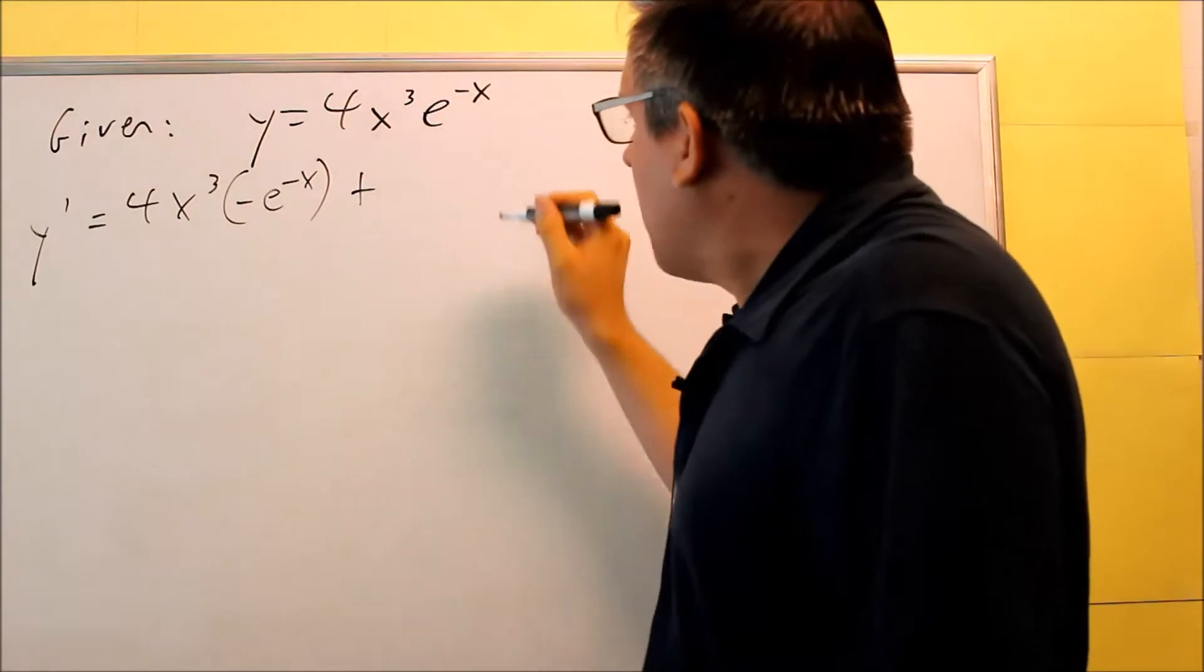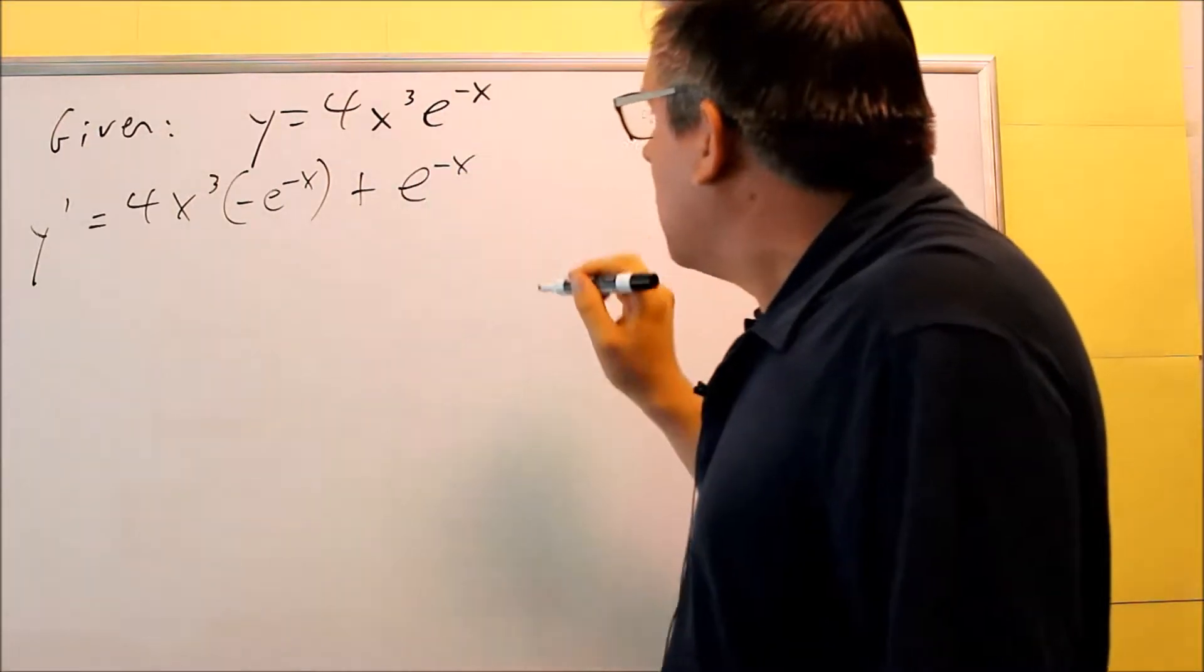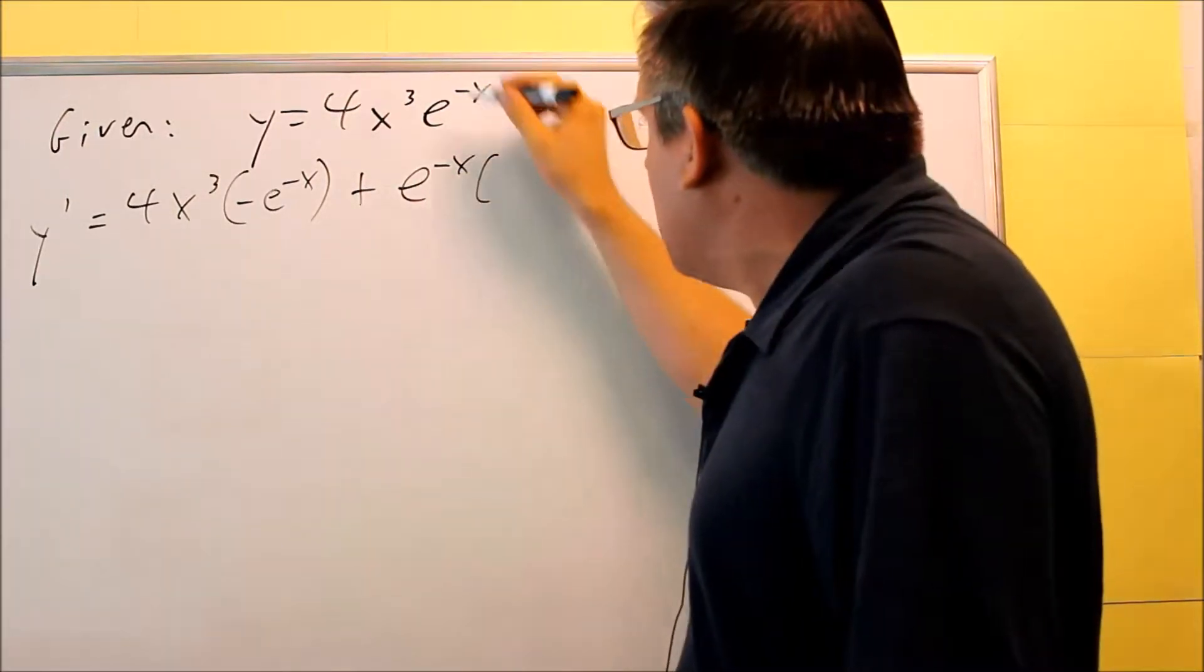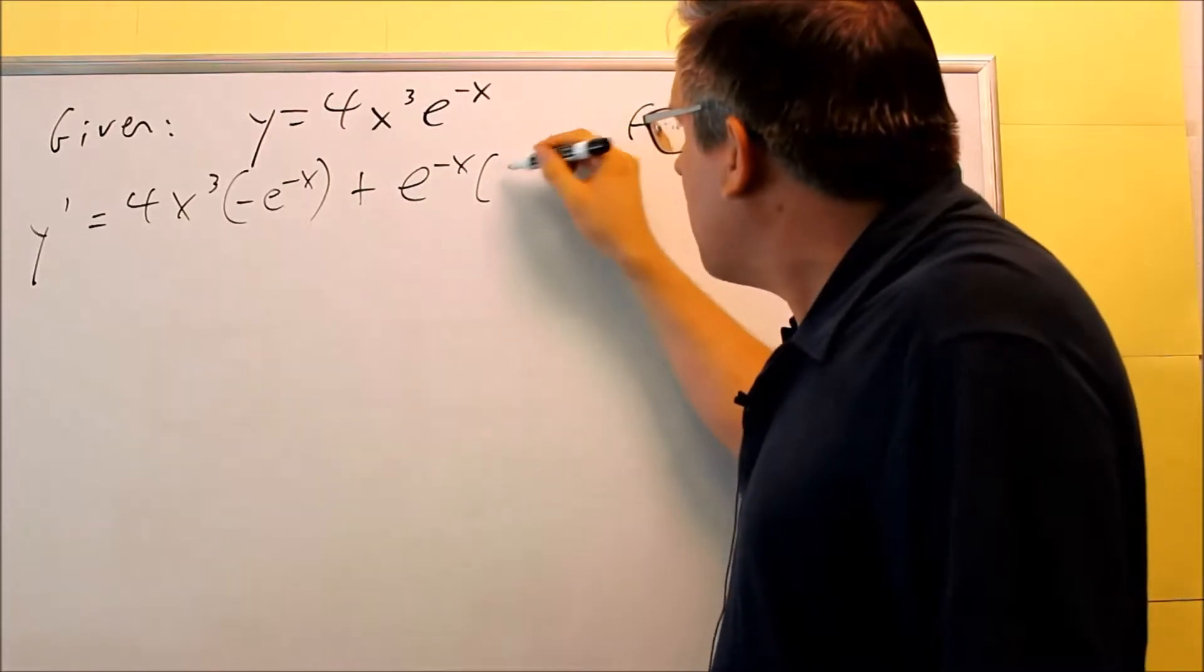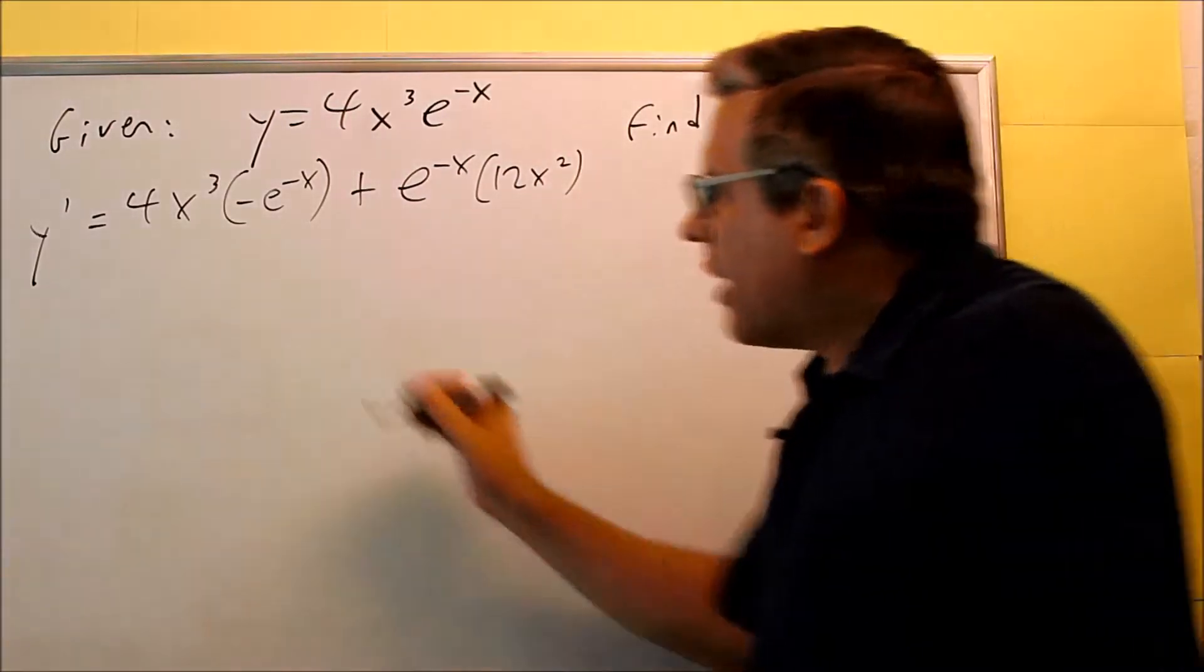We have plus the second thing, e^(-x), the derivative of the first will be, use the power rule on that, 3 comes down, 12x², and we get that.